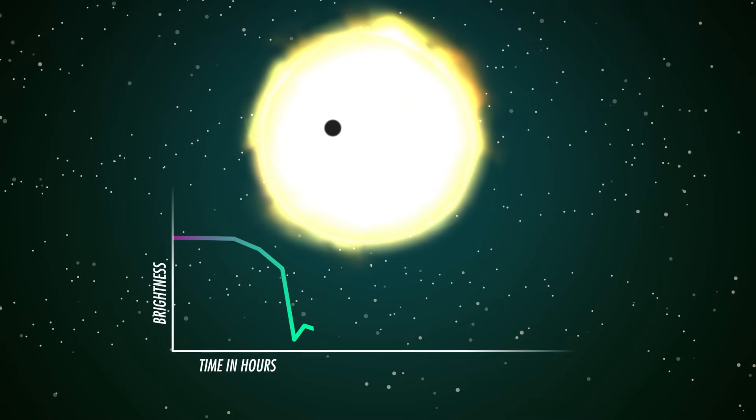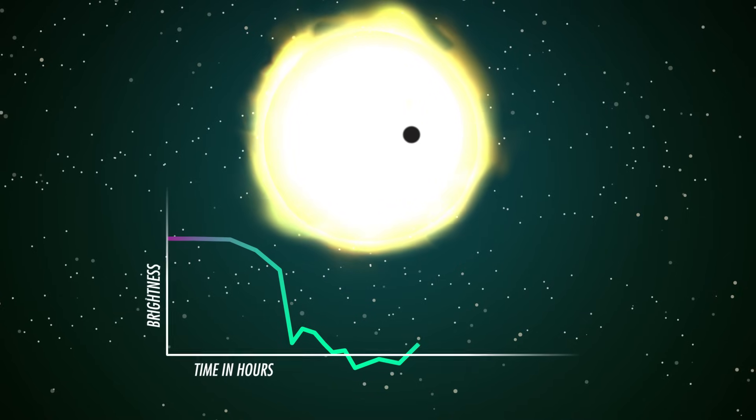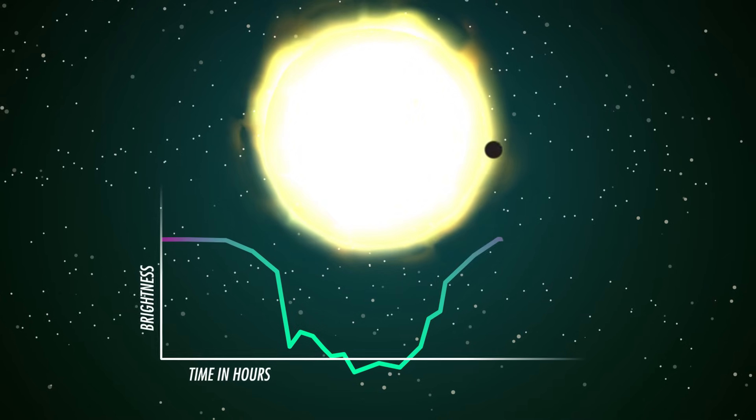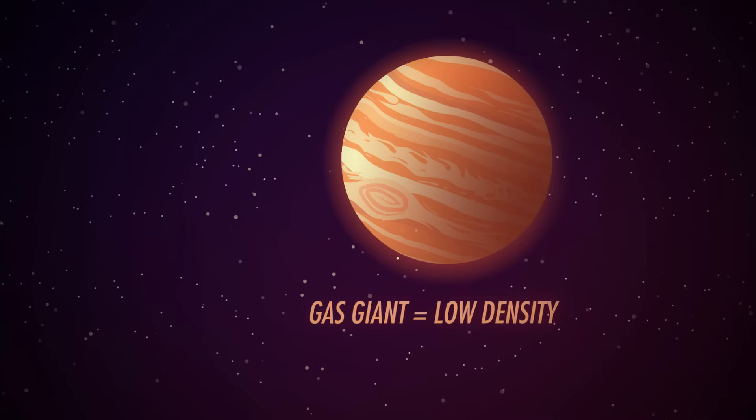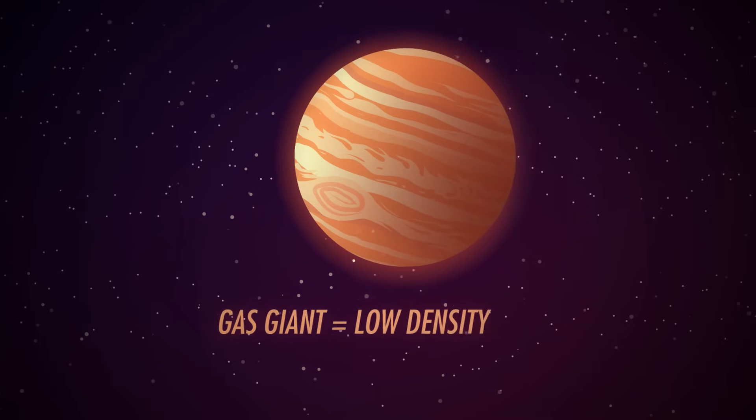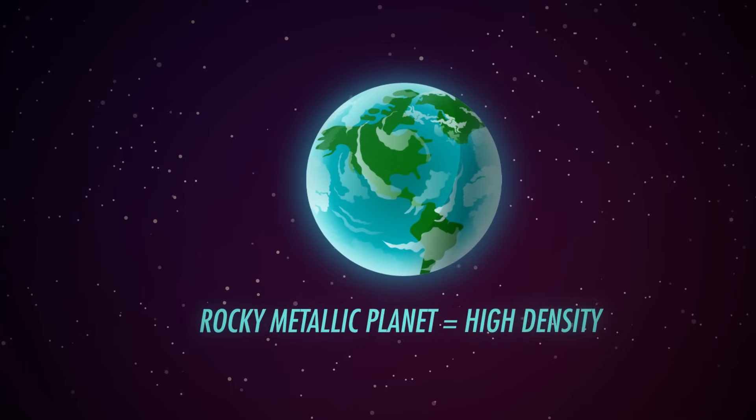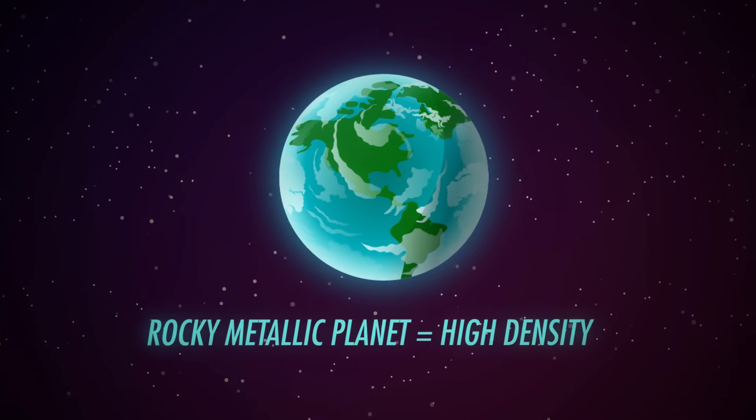The beauty of transiting exoplanets is that the amount of starlight blocked tells you how big the planet is. A big planet blocks more light. If we know the planet's mass from the star's Doppler shift, we can use the planet's size to calculate its density. This is important. A gas giant like Jupiter has a low density, and a rocky metallic planet like Earth has a very high density. Without even being able to see the planet directly, we can already start to determine what it's like physically.